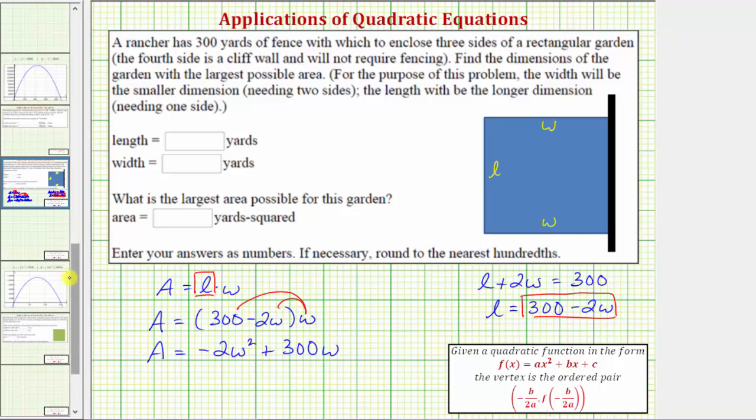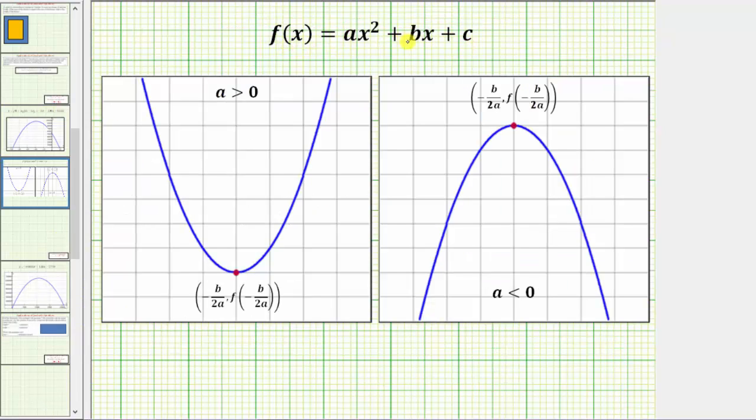So remember in general, when we have a quadratic function in this form here, if a is positive, the parabola opens up, if a is negative, the parabola opens down. So again, we have a parabola that looks like this, it opens down.